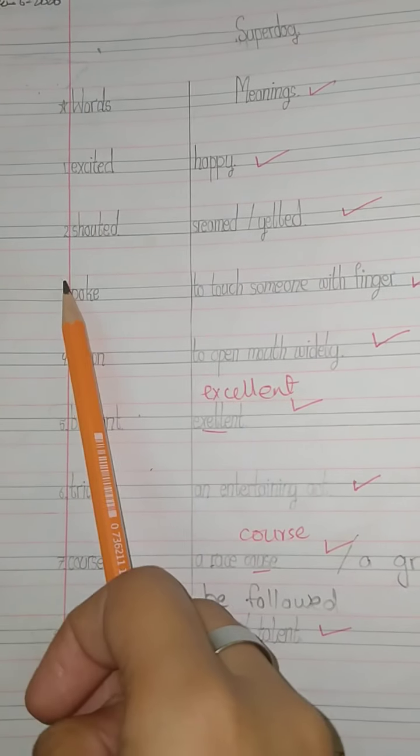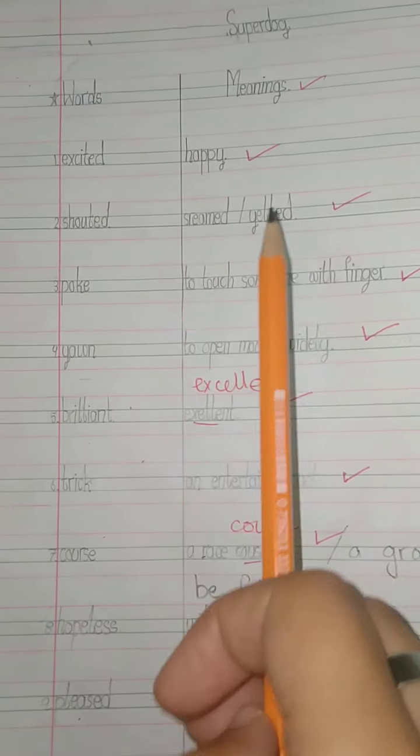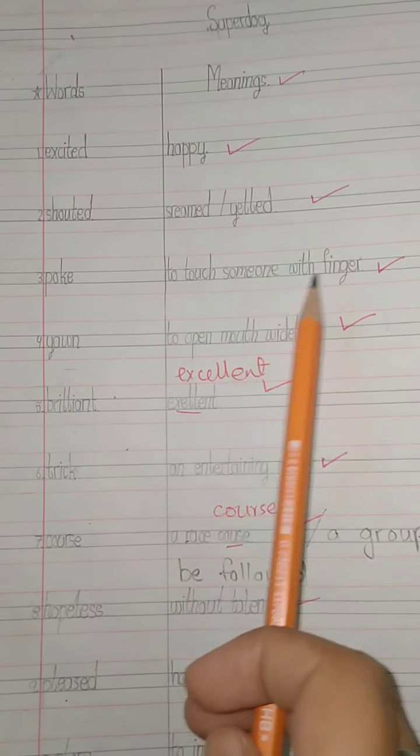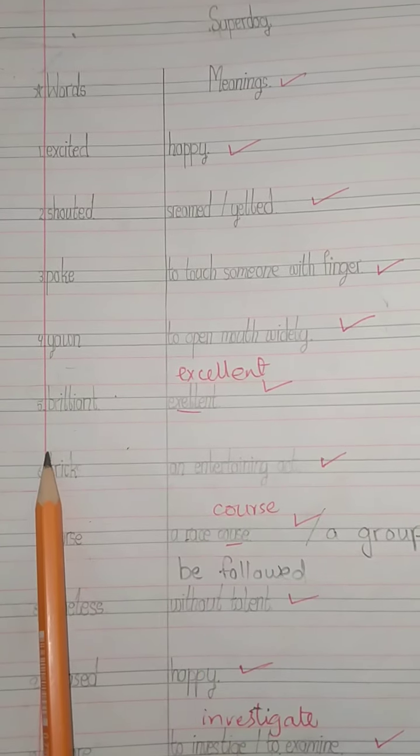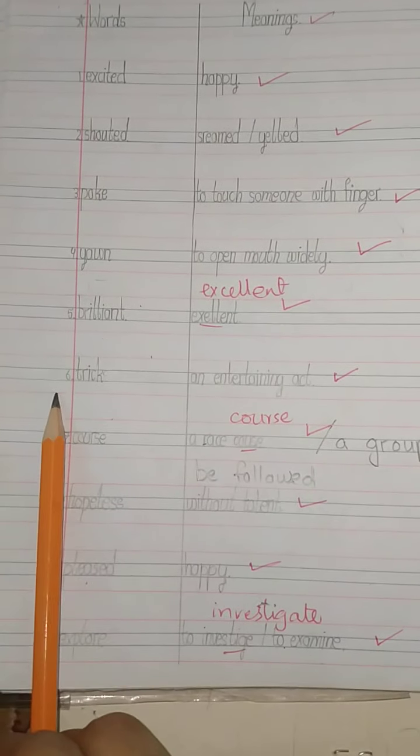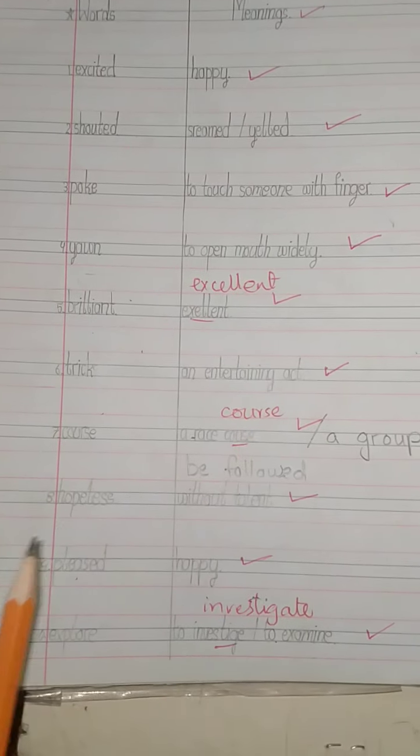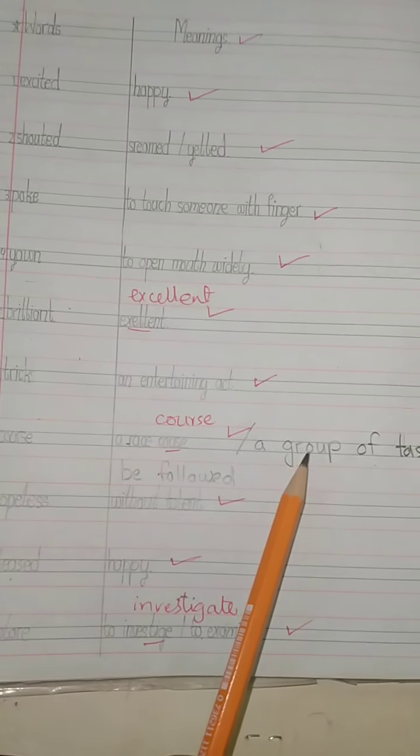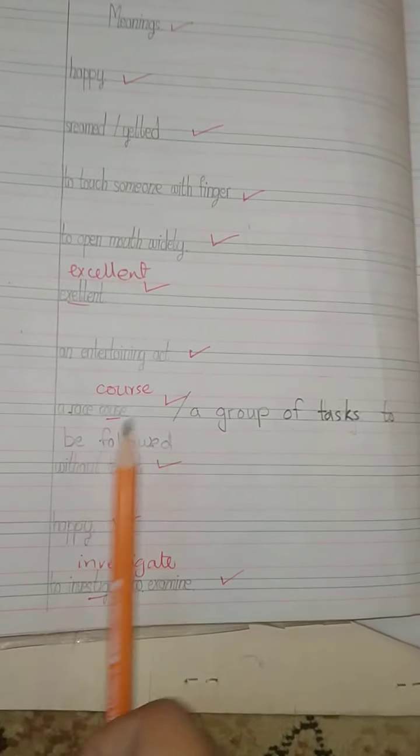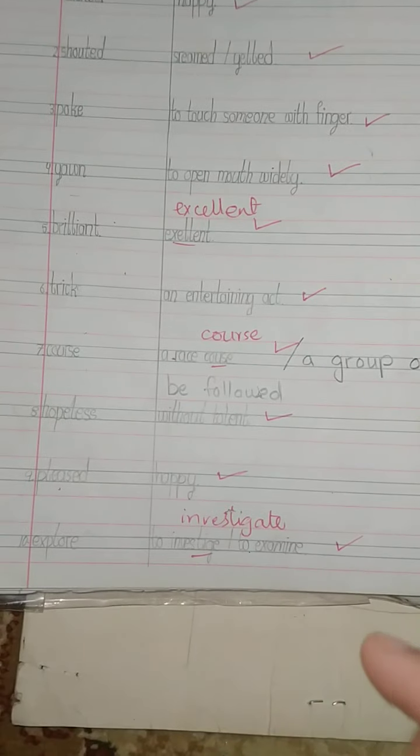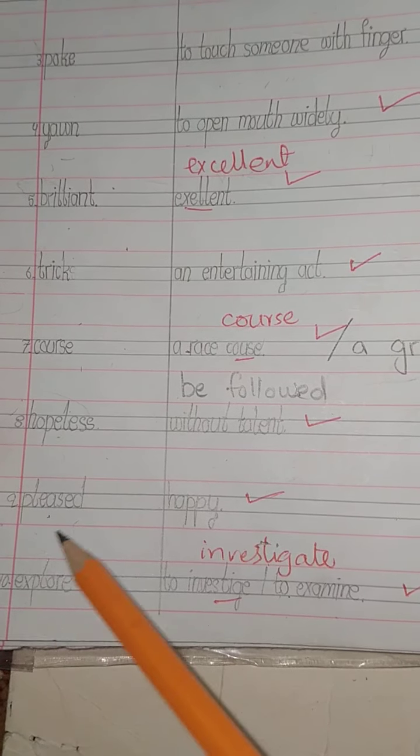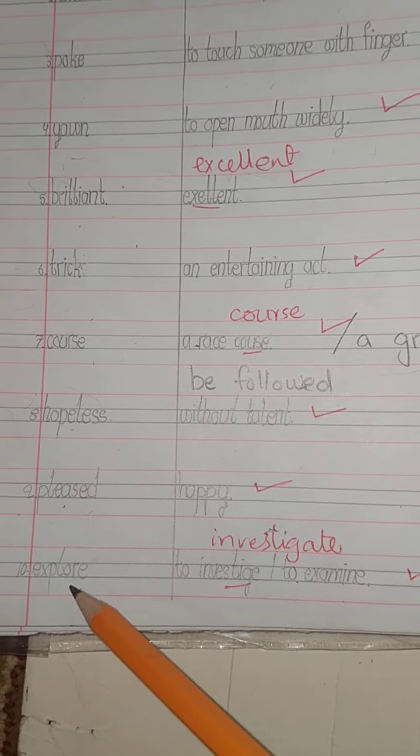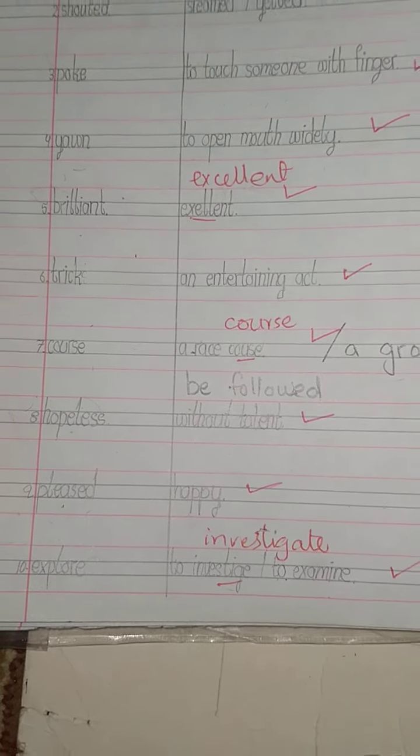Excited means happy, shouted means screamed or yelled, poke means to touch someone with finger, yawn means to open mouth widely, brilliant means excellent, trick means an entertaining act, course means a race course or a group of tasks to be followed, hopeless means without talent, pleased means happy, explore means to investigate or to examine. So class, this was your work.